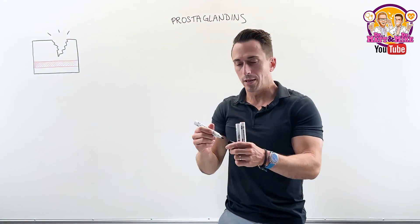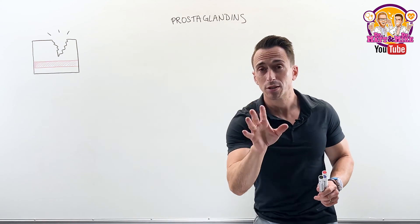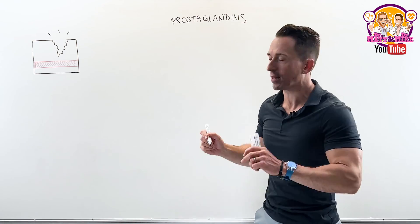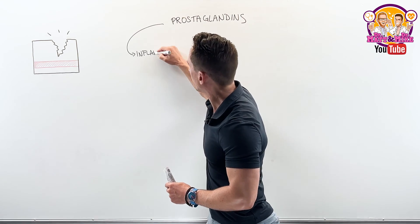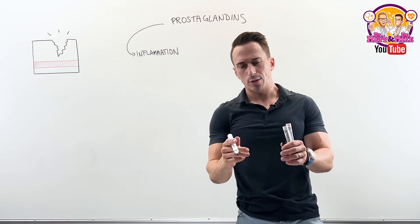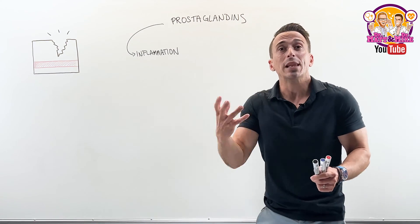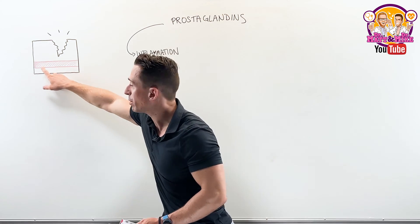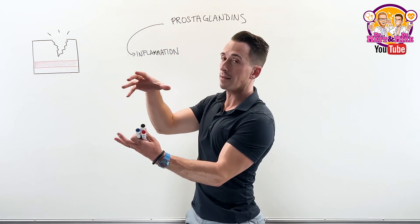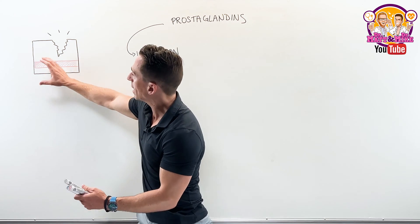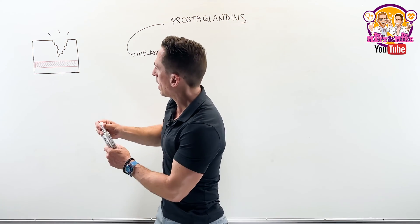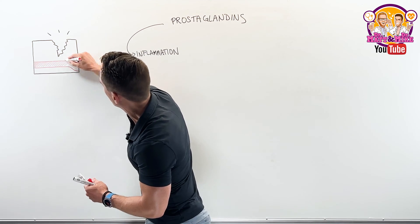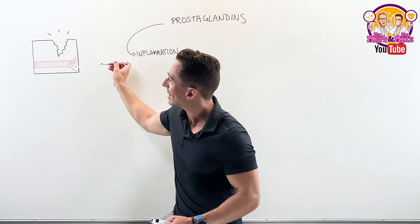So what do prostaglandins do? Importantly, prostaglandins play a role in promoting inflammation. The prostaglandins released by these damaged cells travel to the dedicated blood supply and tell that blood vessel to dilate. If that blood vessel dilates and gets larger, more blood can get to that area.